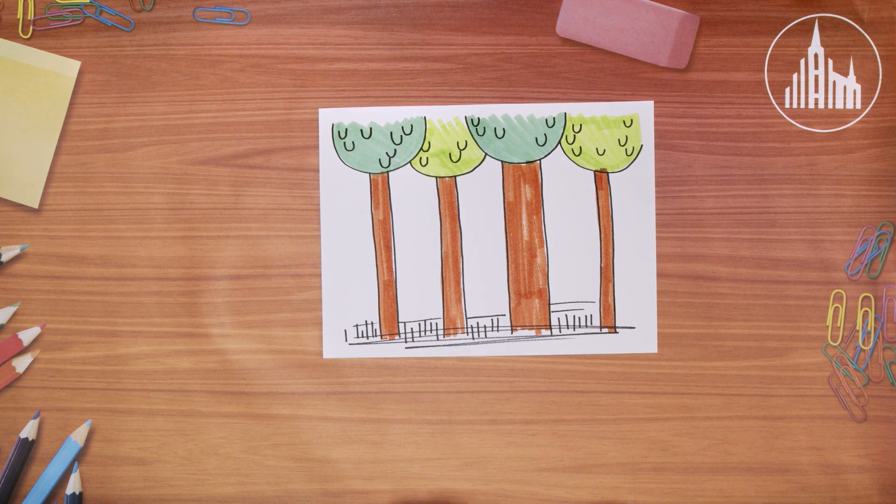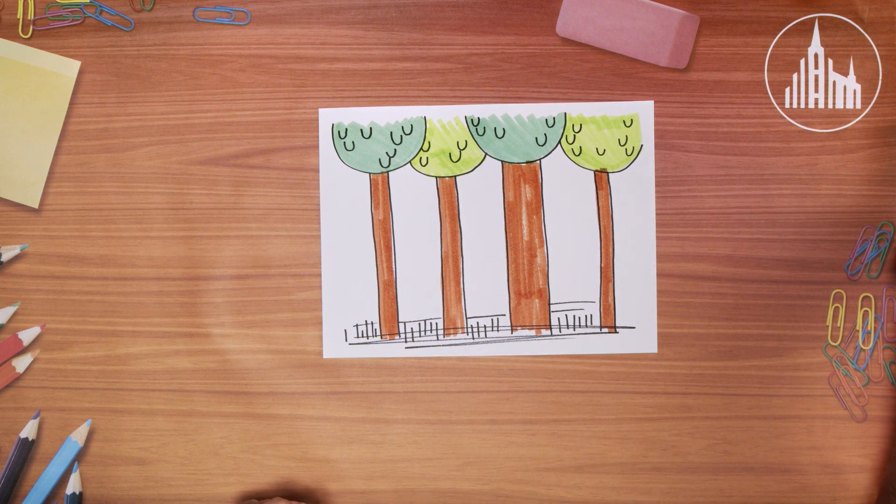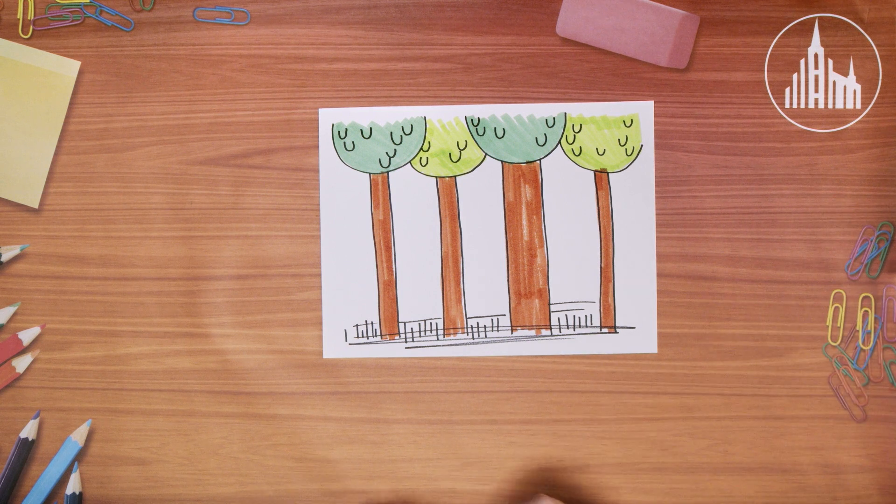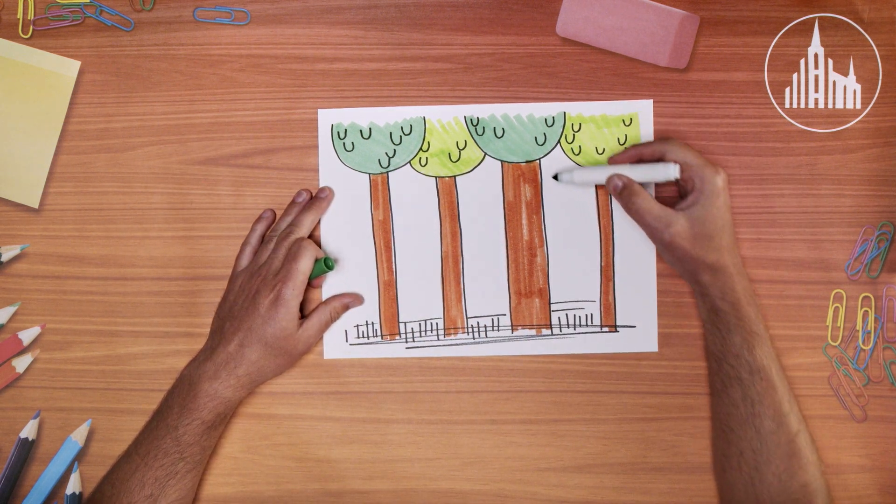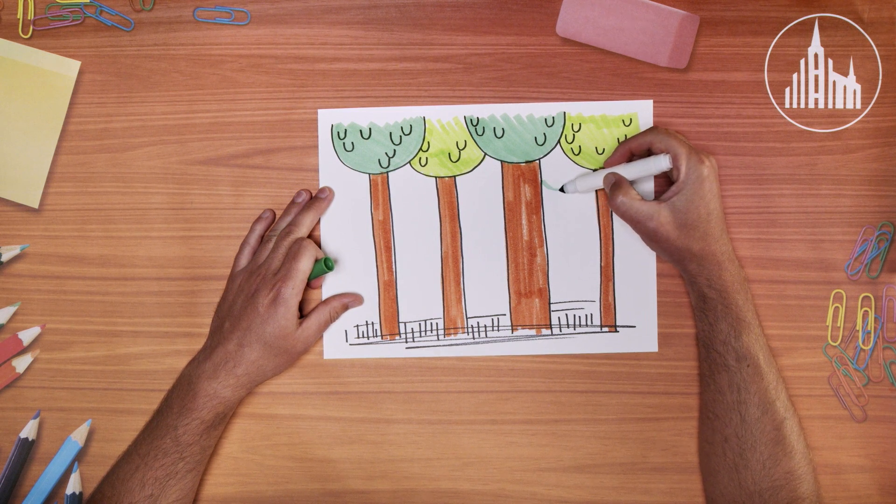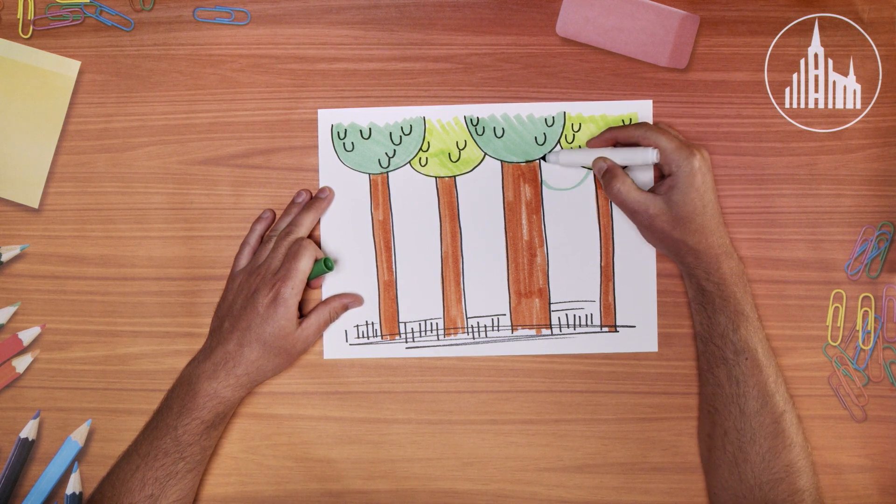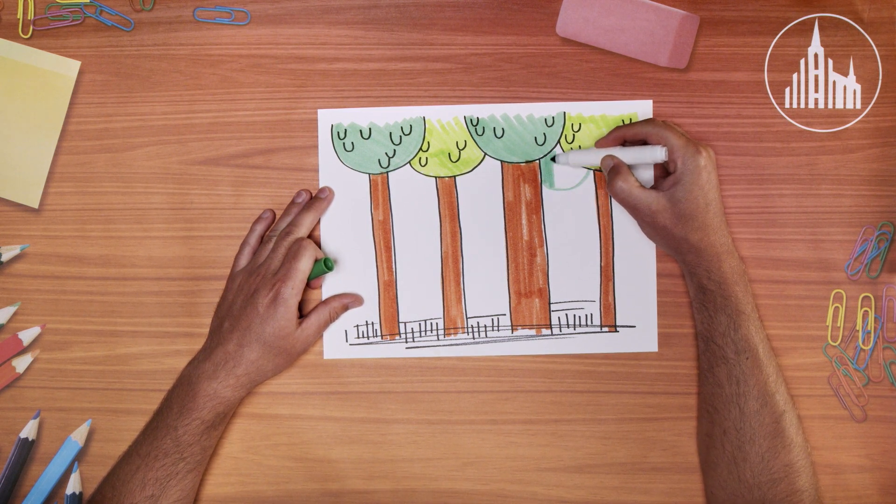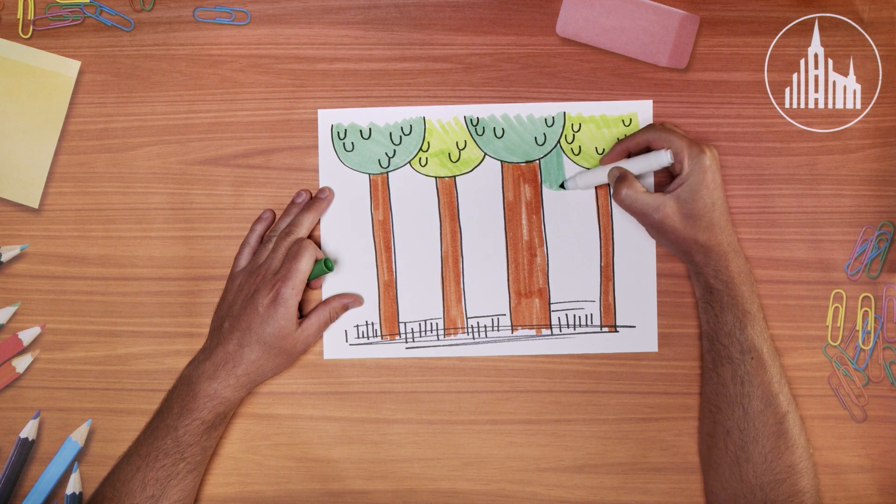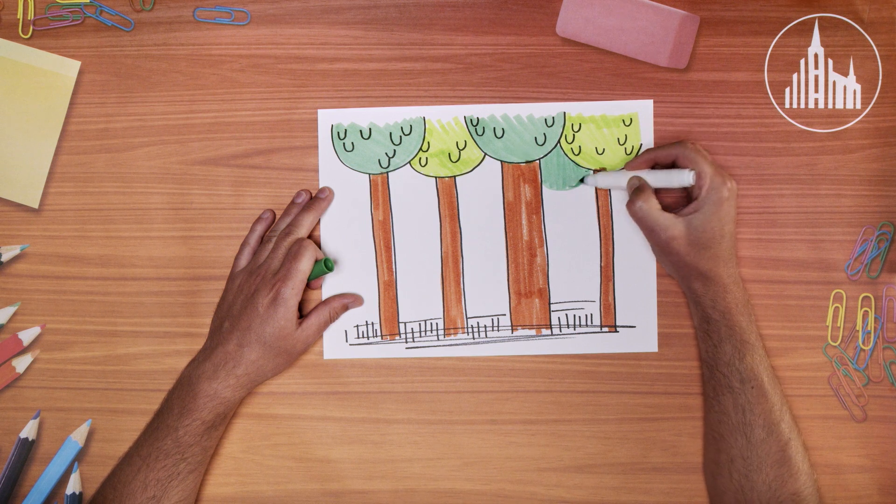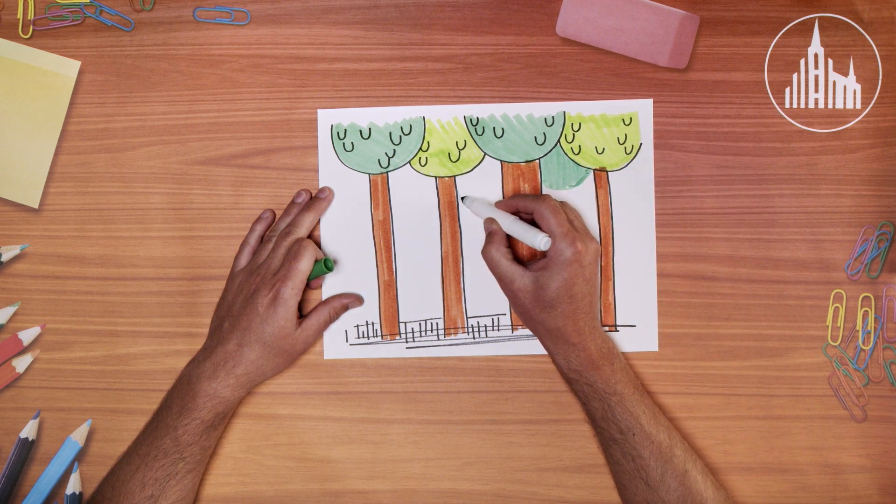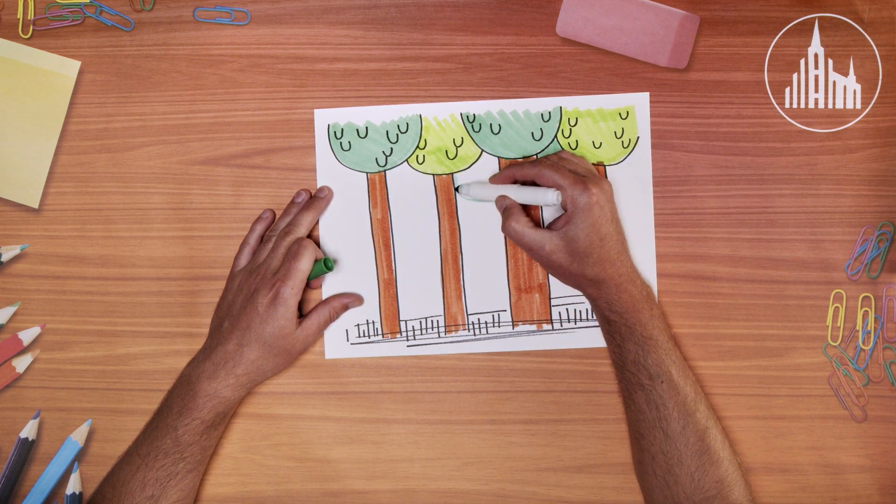Now I want to grab my green again, and we're going to do some more trees in the background. So it makes it look like a whole big forest. So I'm going to do some more circles in here and just fill those in just like the other ones. And I think there's something nice about these ones not having black lines around them because it just kind of makes them look like they're further back.